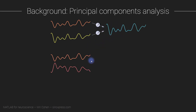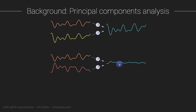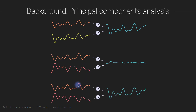Here we see two other time series that are negatively correlated. If we were to average them together using the same coefficients, the result would actually have very low variance — so this is not good. Therefore, in this example PCA will weight one of these time series negatively, so now the weighted average has high variance.